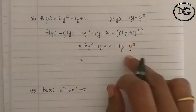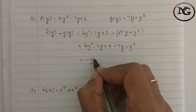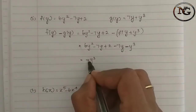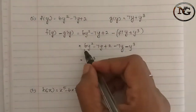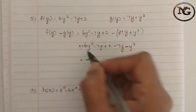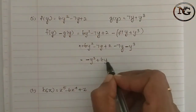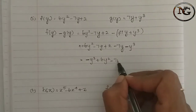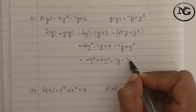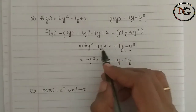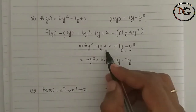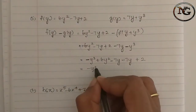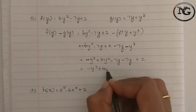Arrange in standard form. First, minus y cube. If there is y squared, that symbol is plus, so plus 6y squared. Next, minus 7y minus 7y — same symbol, so add. Then plus 2. This is minus y cube plus 6y squared.